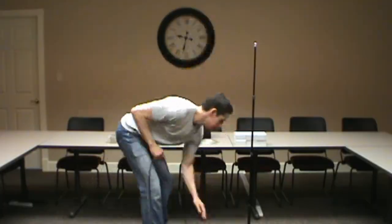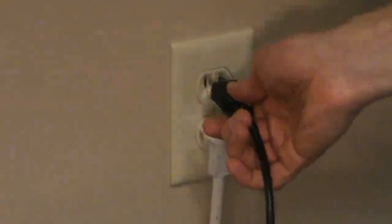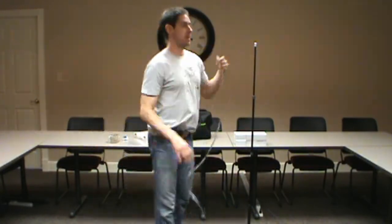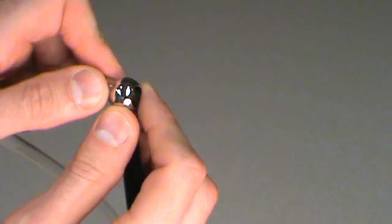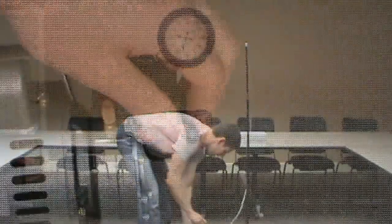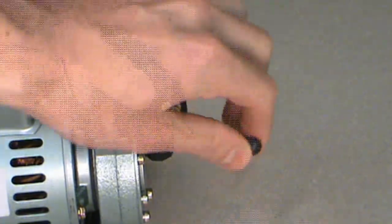Unpack your vacuum pump and plug it in. Thread one end of the plastic tubing through the top of the tripod and connect the other end to the nozzle on the vacuum pump.